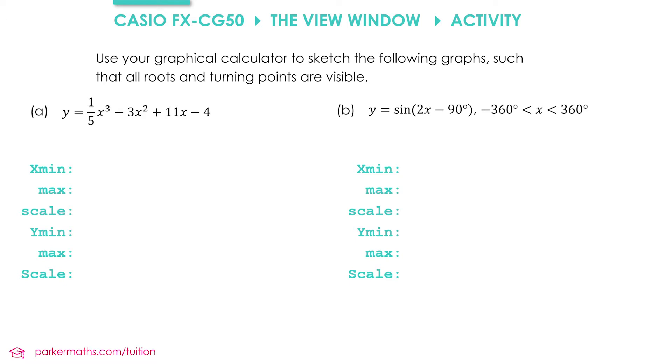Then you need to adjust the view window so that you can see all of the routes and turning points on the screen in one go. When you've been successful, write down the values you can see written on the screen.